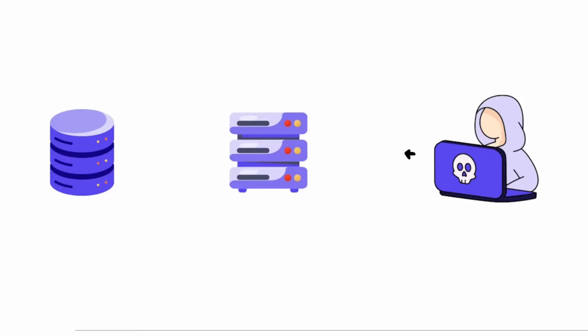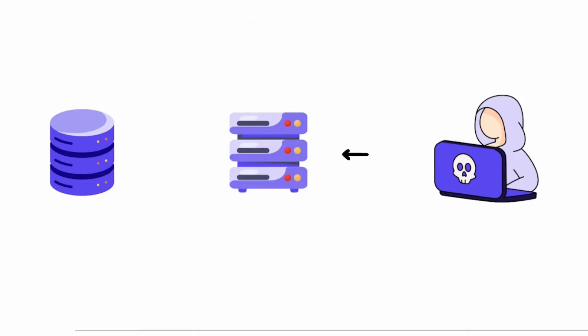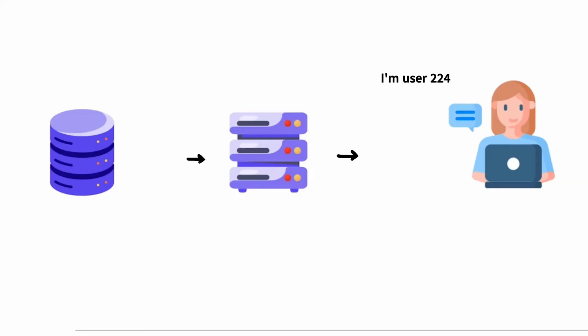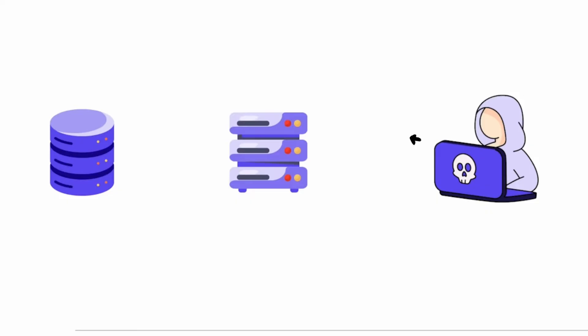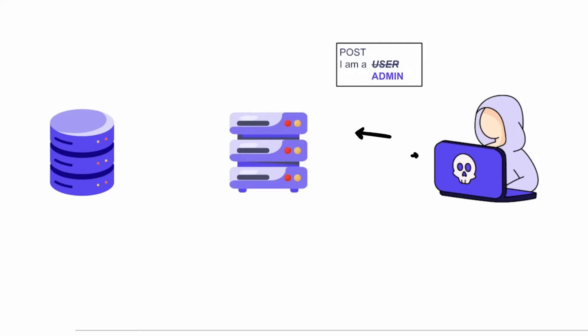What is broken access control? It's pretty simple in essence. It's when a user is able to access privileged data that they're not supposed to. They can do this either by trying to access data they shouldn't be allowed, accessing data of a different user — either intentionally or unintentionally — or being able to elevate their privileges, for example moving from a read-only user to an admin user. All of these are examples of broken access control.